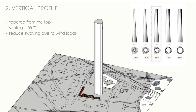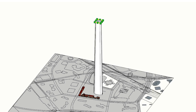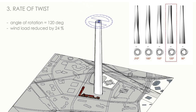The second component is the Vertical Profile. From a functional point of view, it is important to maintain a wide footprint for the lower third of the tower with a slender footprint at the upper third — a reduction of about 55% overall — to reduce swaying due to wind loads.